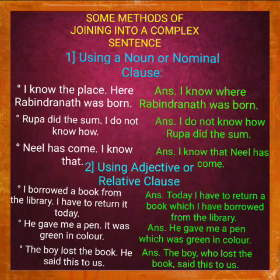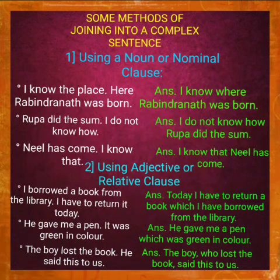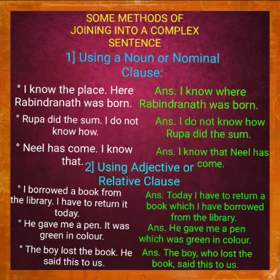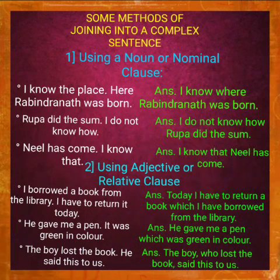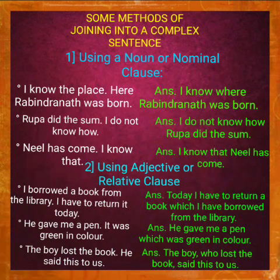The second method is using an adjective or relative clause. Example — 'I borrowed a book from the library' and 'I have to return it today.' If I join them into a complex sentence using a relative clause, the answer will be: 'Today I have to return the book which I have borrowed from the library.' Here, 'which' is the relative pronoun, 'book' is the antecedent, and the relative clause is 'which I have borrowed from the library.' The main independent clause is 'today I have to return a book.'